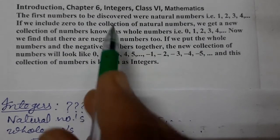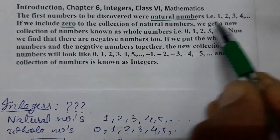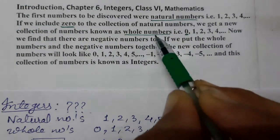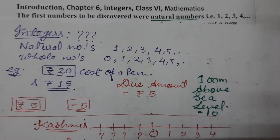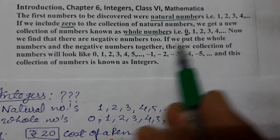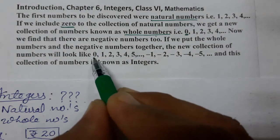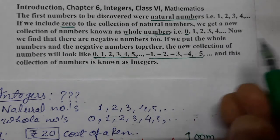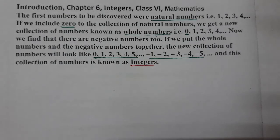The first numbers to be discovered were natural numbers: 1, 2, 3, 4. If we include zero, we get a new collection known as whole numbers: 0, 1, 2, 3, 4. Now we find that there are negative numbers too, as we have seen in the examples. If we put the whole numbers and the negative numbers together, the new collection looks like this: 0, 1, 2, 3, 4, 5 and minus 1, minus 2, minus 3, minus 4, minus 5, and so on. This collection is known as integers.